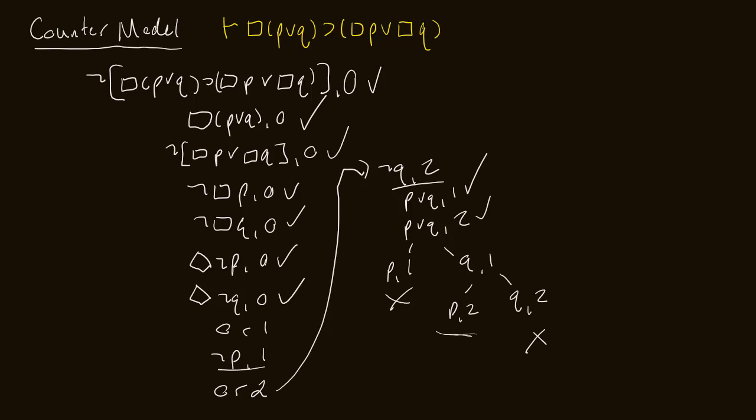So now, how do we construct our counter model? First thing we do is we look at all of the worlds that exist on our open branch. So on our open branch, if we follow it all the way back to the whole tree, the worlds that exist are worlds zero, one and two.